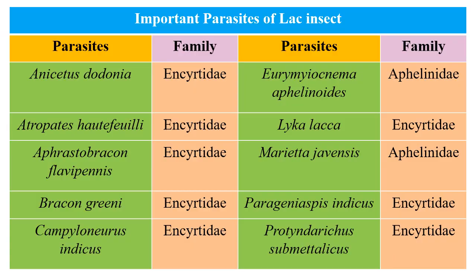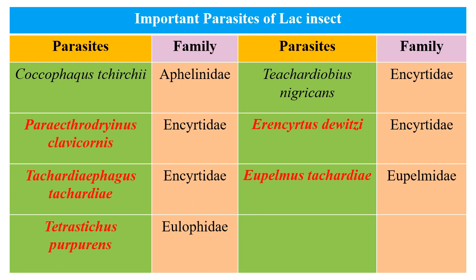This is the table showing some of the important parasites of lac insect. Important parasites such as P. clavicornis, E. duetze and T. stachardii belong to family Encyrtidae. Whereas E. stachardii belongs to family Eupelmidae and T. purpureus belongs to family Eulophidae.